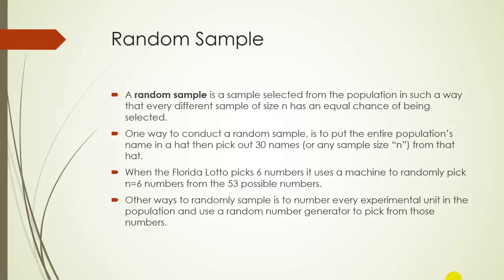One way to conduct a random sample is to put the entire population's names in a hat, then pick out 30 or any size n you'd like. We don't physically have to use a hat — for example, the Florida Lottery picks six numbers randomly using a machine from 53 possible numbers, with one number written on each ball. Another way is to number every experimental unit in the whole population and then use a random number generator to pick from those numbers. This works well for students since every student already has a student ID.